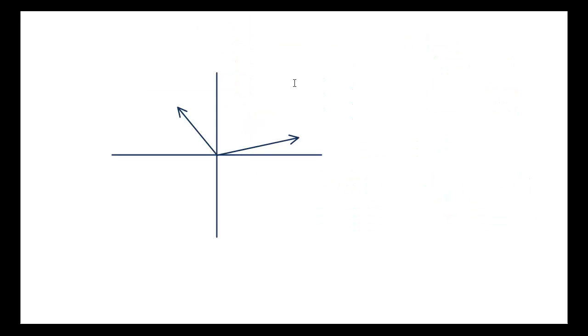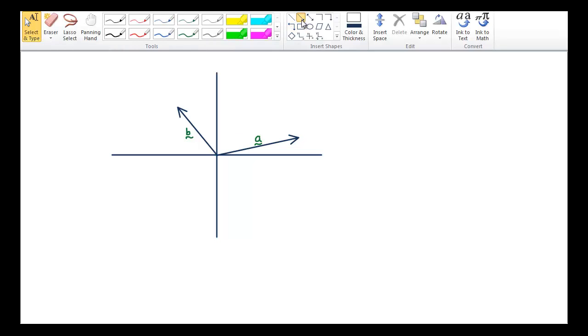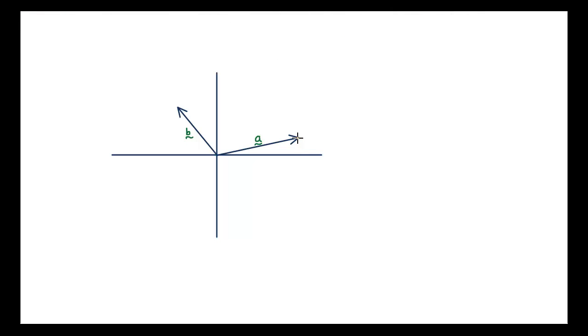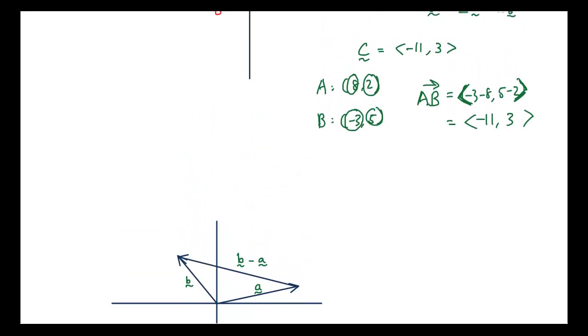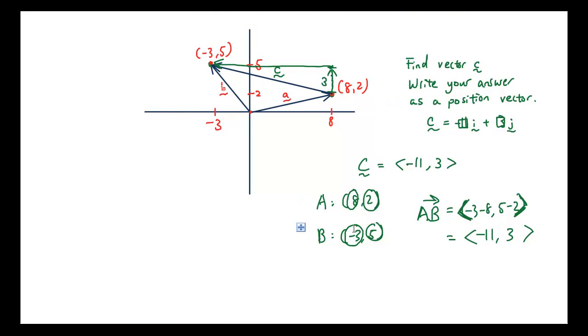Now if you have two vectors coming out from the origin, let's say this is vector A and this is vector B. Then if you are going from the head of vector A towards the head of vector B, then this vector is actually the same thing as vector B minus vector A. So that's what we have already calculated. Because if you have a look, vector B is negative 3 and 5.